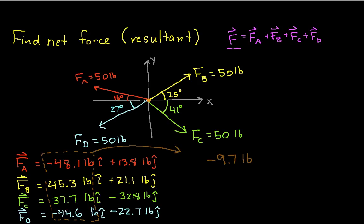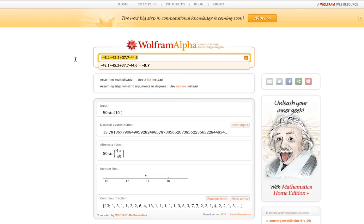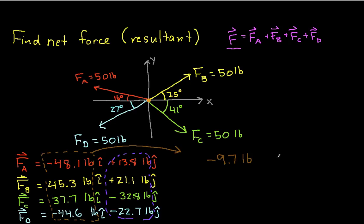Okay, let's look at the y components. And again, we will sum these guys to get the y component of the resultant. So we have 13.8 plus 21.1 minus 32.8 minus 22.7. And that gives us negative 20.6 pounds. So we have minus 20.6 pounds.